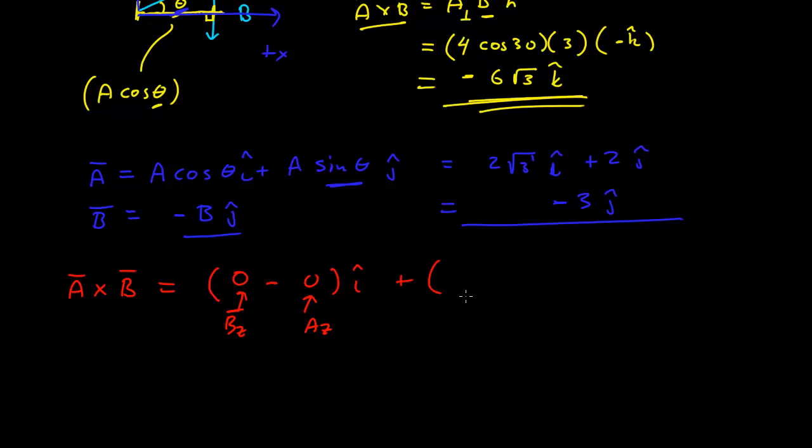In this other one, this was Az times Bx. Well, Az is 0, minus Ax times Bz, but Bz is 0, so that's 0 too, and that's j-hat. So then the final term of the cross product was Ax, and the Ax was 2 times the square root of 3 times By, and By was negative 3, minus Ay, the y component of A, which is 2, times Bx, the x component of B, which was 0, and this was k-hat. Here's this term 0, so I'm left with this term, which is negative 6 square root of 3 k-hat.